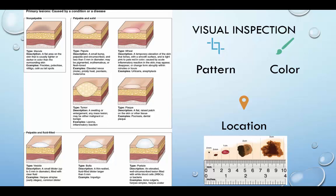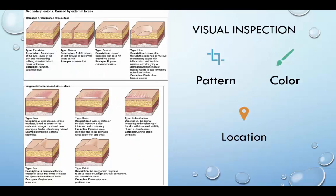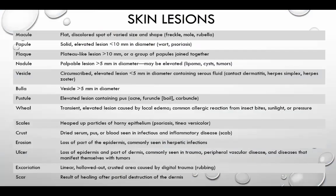We can also have palpable and fluid-filled lesions. Things like vesicles, bullae, and pustules are palpable and fluid-filled. Secondary lesions are caused by an external force. We can have damaged or diminished skin surfaces, such as excoriation, fissures, erosions, and even ulcers. We can also have augmented or increased skin surfaces — the skin kind of bubbles up — such as crust scales, lichenification, scars, and even keloids. Skin lesions are identified by their size and their depth.